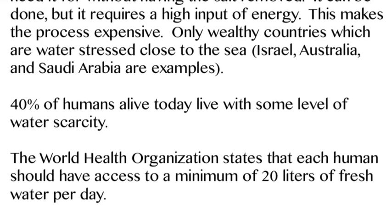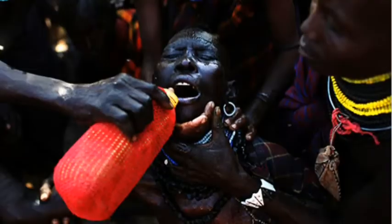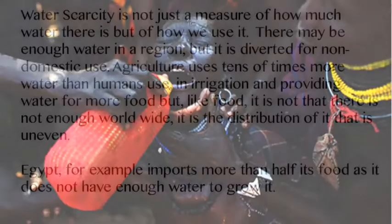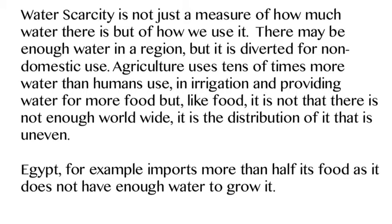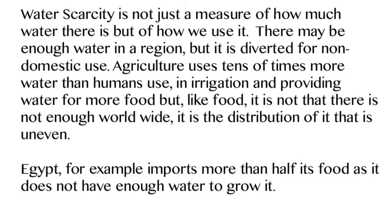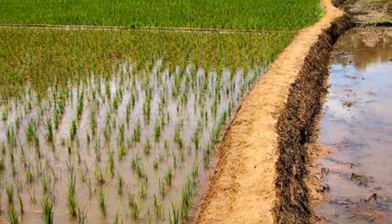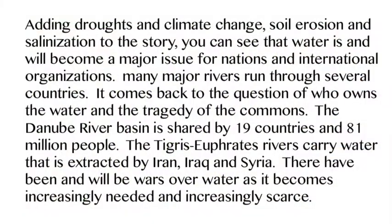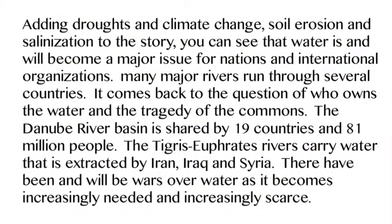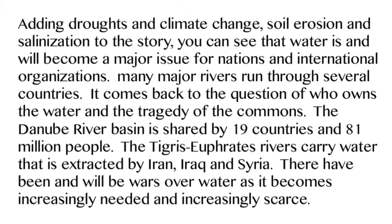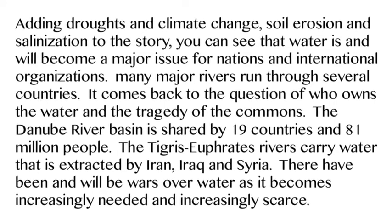Salt water makes up 70% of the planet's water, but you can't easily use it — it's really expensive to remove the salt and takes a lot of energy. Only wealthy countries can afford desalination. Countries in the middle of a continent without money can't do that. This is water scarcity, and it's not just about how much water there is — it's how we use it. Using water to irrigate crops or cool factory machinery increases water scarcity. Add droughts, climate change, and soil erosion, and water becomes more and more critical.